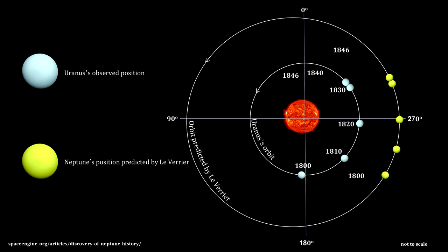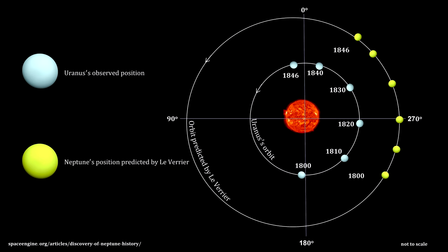Astronomer Urbain Le Verrier went to work to try to discover this new planet. Early in 1846, he published calculations that came very close to where it actually was. On September 23rd of that same year, Johan Gall, an astronomer at Berlin Observatory, and a student, Heinrich-Louis de Arrest, found the new planet looking where Le Verrier had placed it. This planet is now called Neptune.